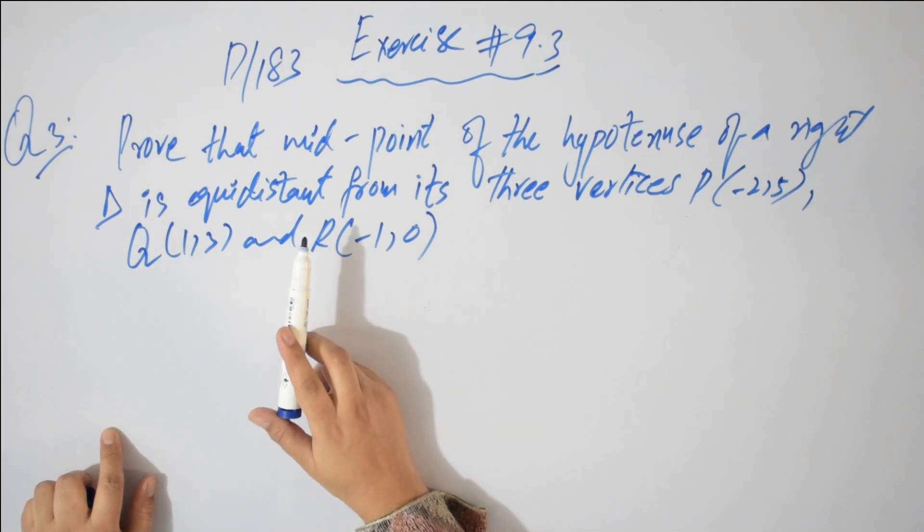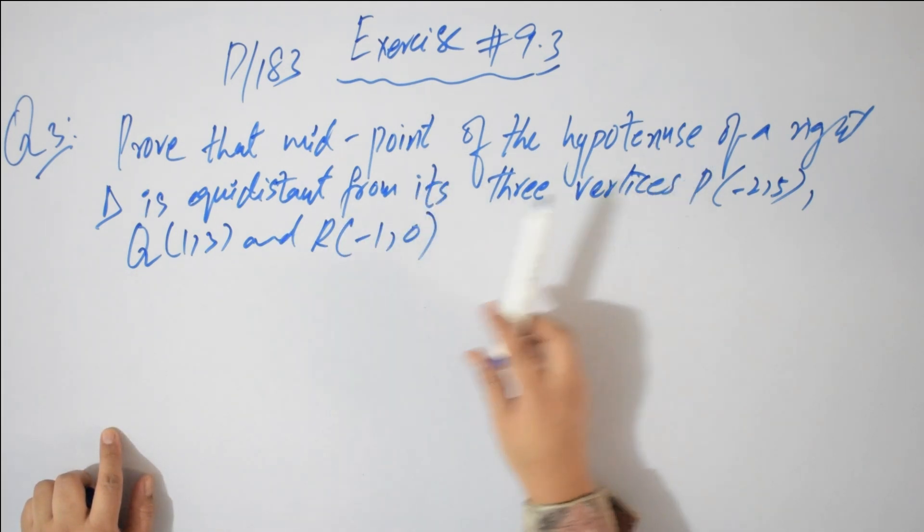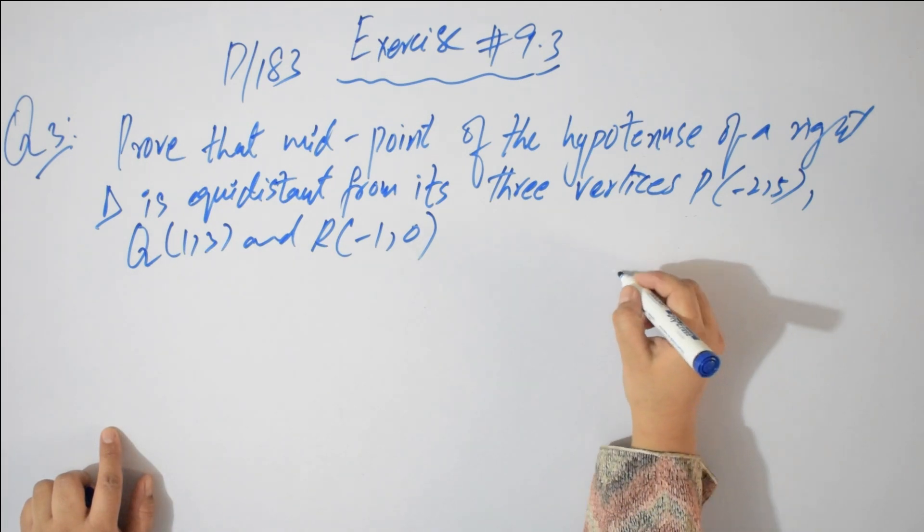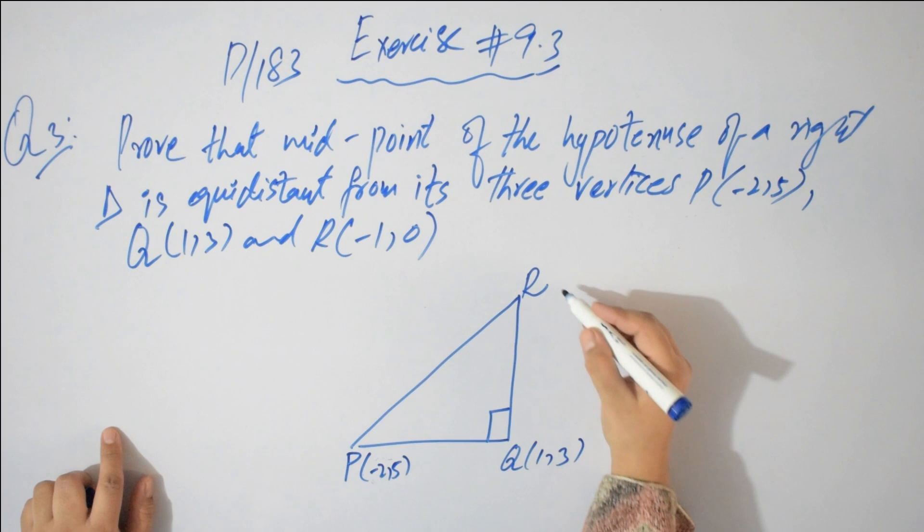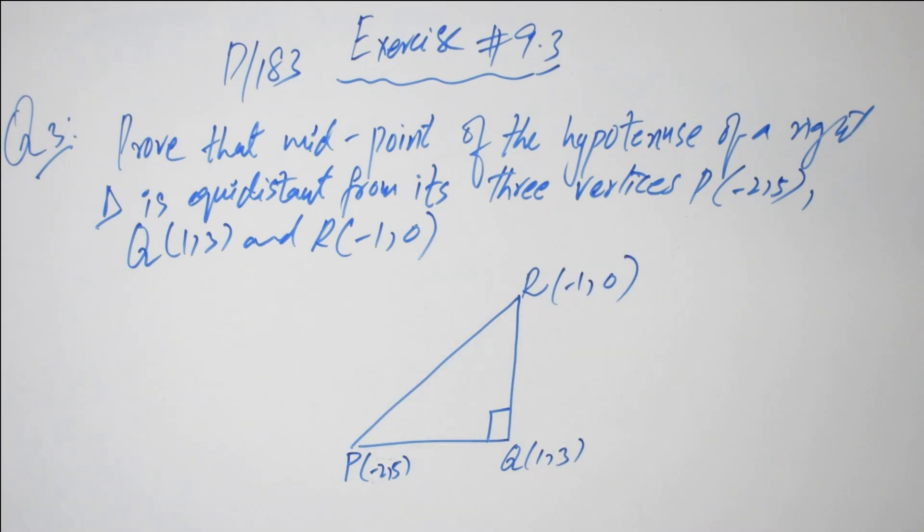In this question third, I am reading: the midpoint of the hypotenuse of a right triangle. Students, you have a right angle triangle, and the vertices of right angle triangle are P, Q and R. P is (1,3), Q is (-2,5), and R is (-1,0).